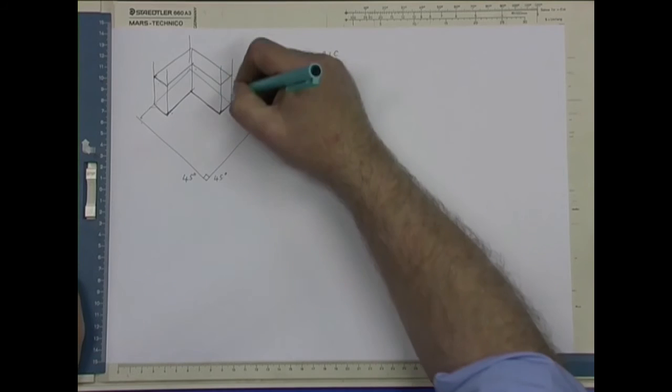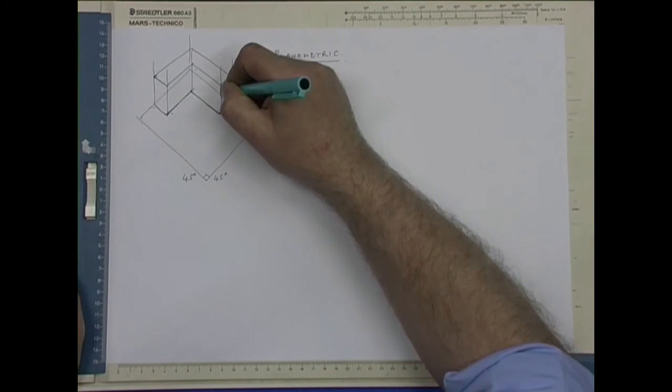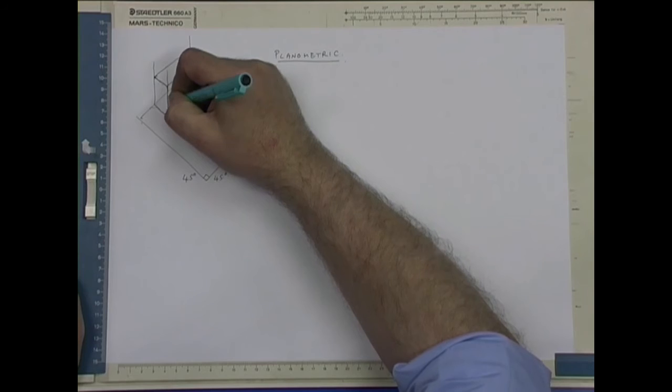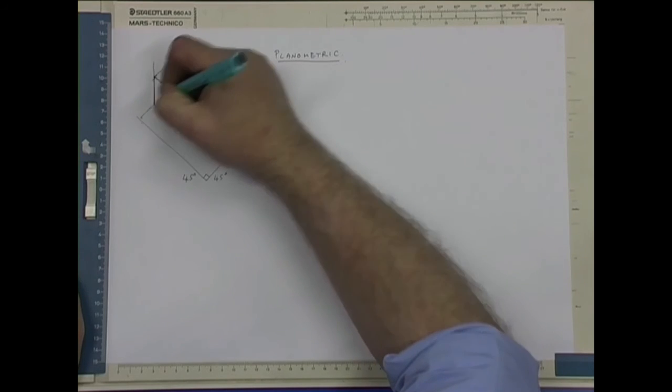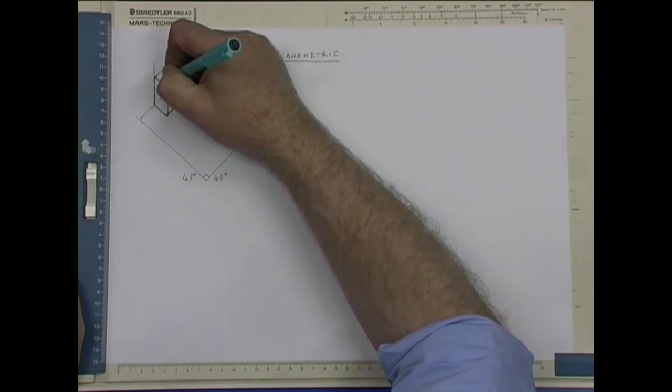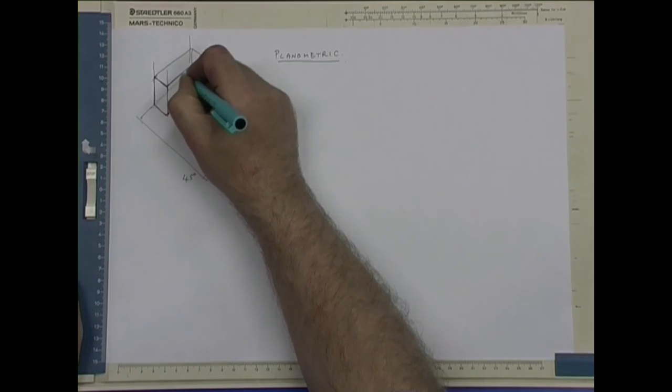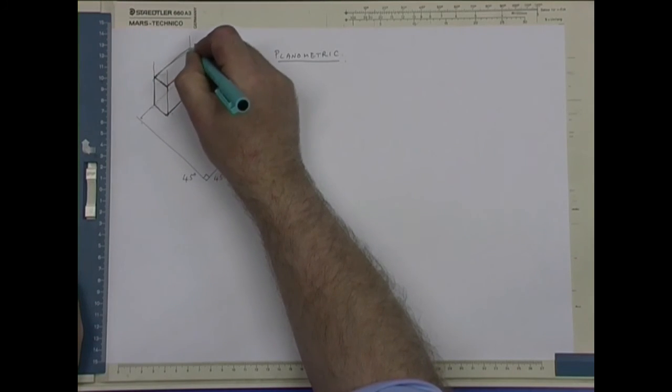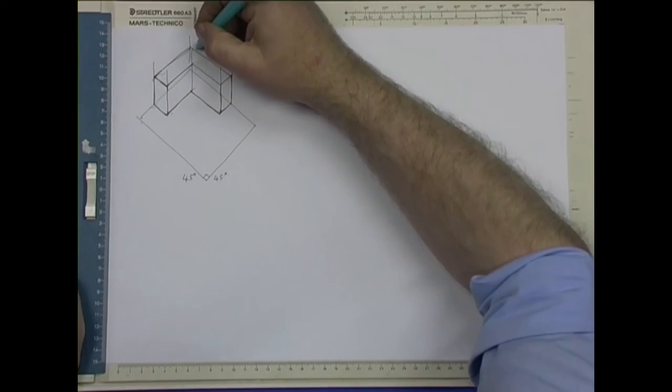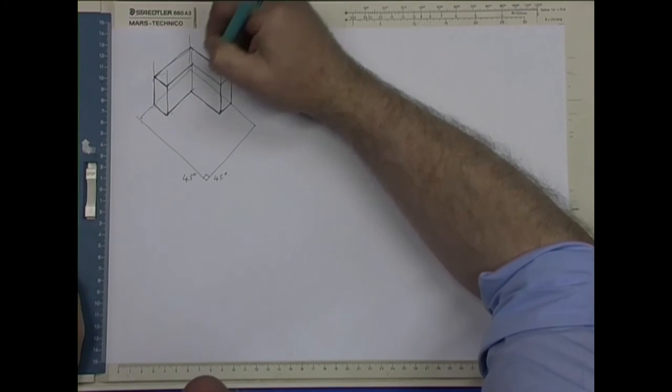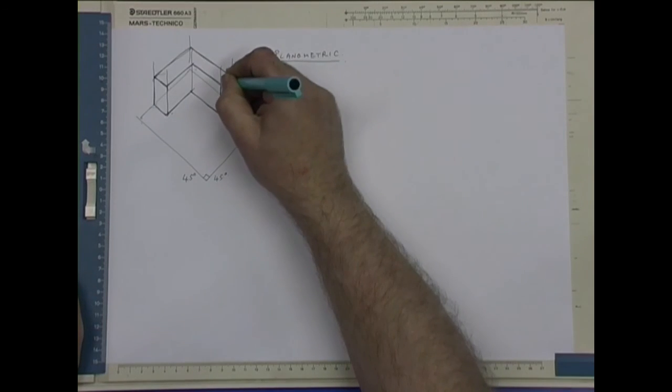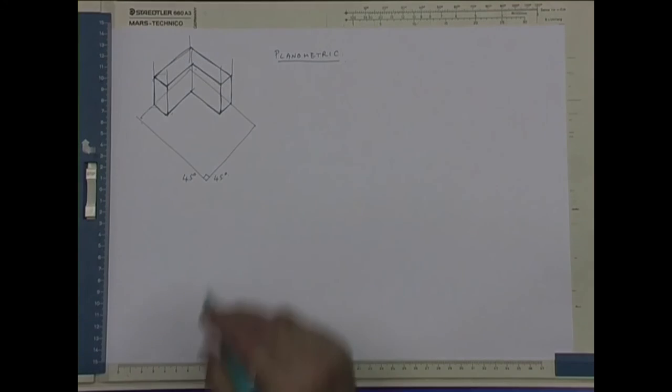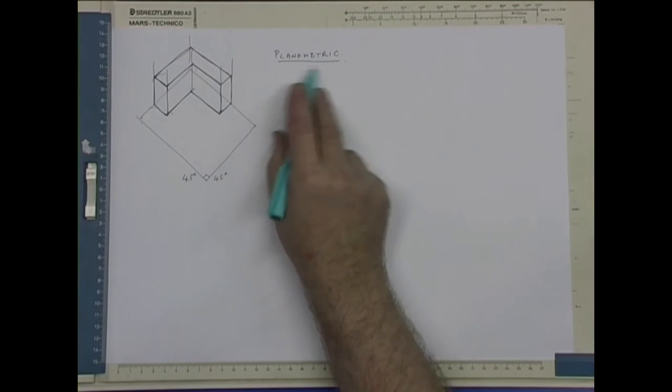There are normally room views, kitchens, bathrooms, pieces of furniture. It can be complicated with curves, but they're all done the same way. The plan and the heights are projected up. And that's why it's called a planometric.